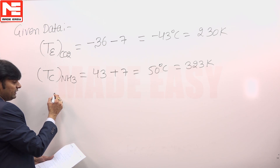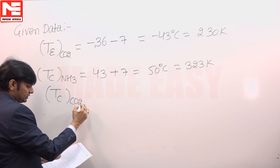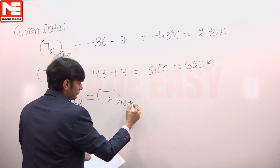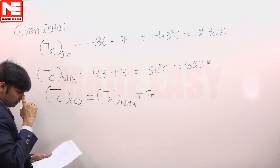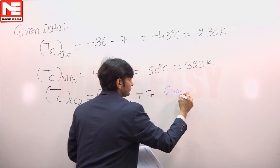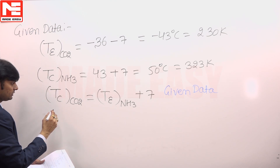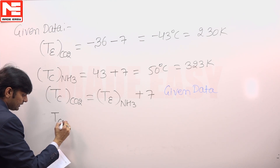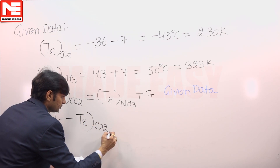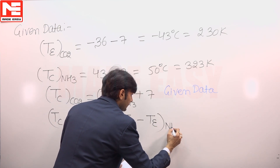In the cascade condenser, the condenser temperature of the CO2 is equal to the evaporator temperature of the ammonia plus 7 degrees. This is the given data: we have to maintain a 7 degree Celsius temperature difference.